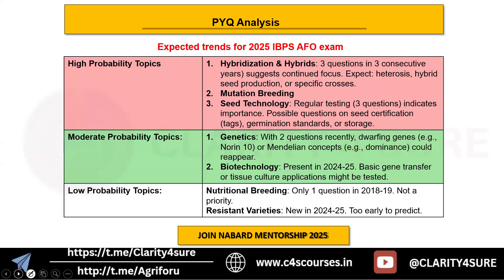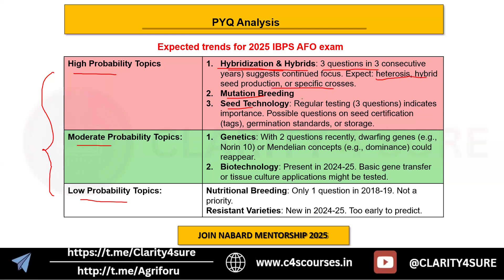Let's consider what might come in the 2025 exam. Predictions are divided into three headings: high probability, moderate probability, and low probability topics. For high probability topics there are three: hybridization and hybrids, mutation breeding, and seed technology. Hybridization is important because its recent frequency of three questions in three consecutive years suggests it may continue — expect questions on heterosis, hybrid seed production, or specific crosses.